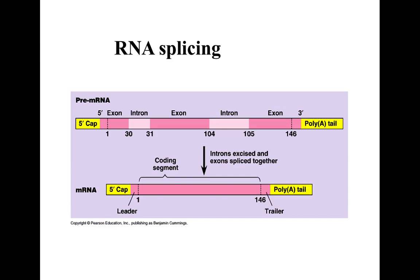Today we are going to talk about the third type of post-transcriptional modifications, which is known as RNA splicing. This is a pre-mRNA molecule. We have a 5' cap and a poly-A tail at the 3' end. The exons are the coding parts of the mRNA molecule, and in between them we have the introns, which are the non-coding parts. We need to remove these introns and put together the exons in order to constitute what we call a mature mRNA molecule.